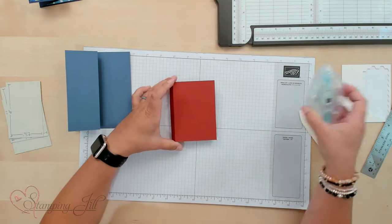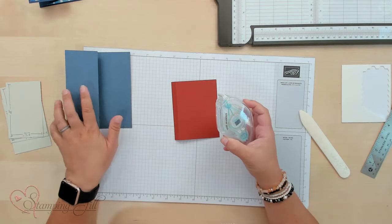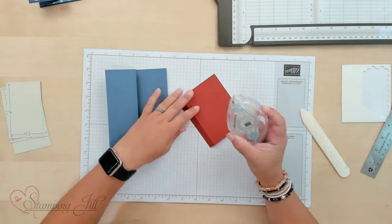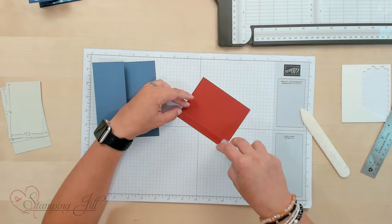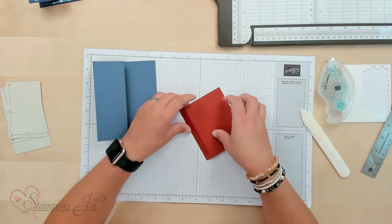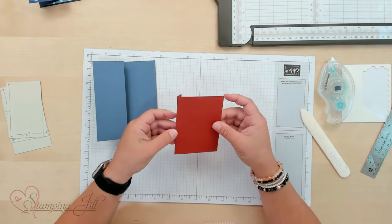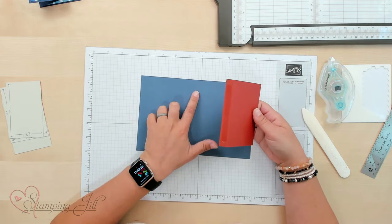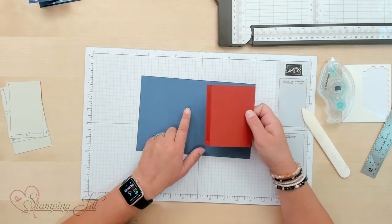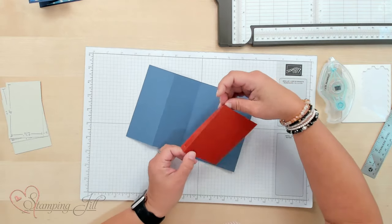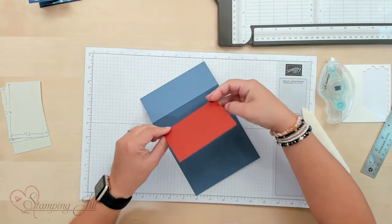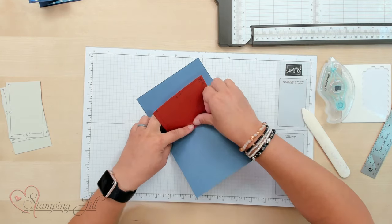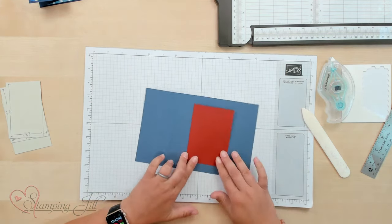Next, what we're going to do is adhere this piece into our card base. So we're going to just put Stampin' Seal. You could also use Stampin' Seal Plus or Tear and Tape if you want a little bit of a stronger hold. And we're just going to take right on the inside of our card at the middle crease. We're going to adhere this down on this side of that crease, just like that.